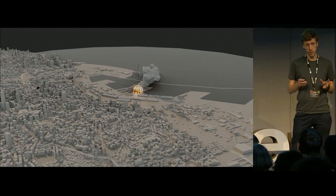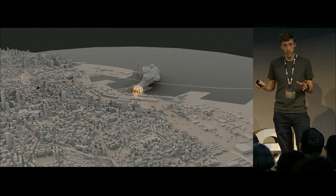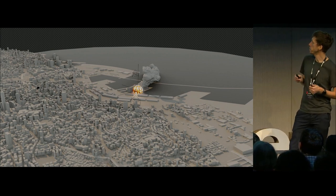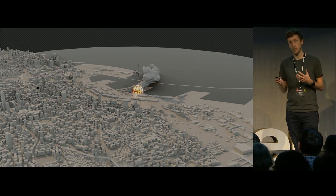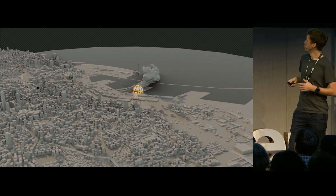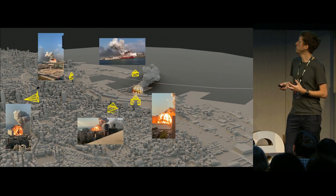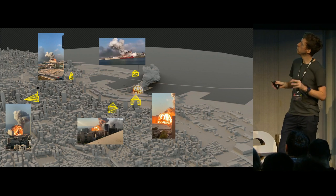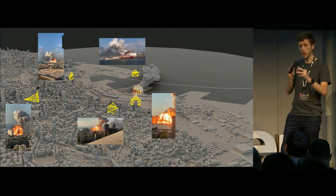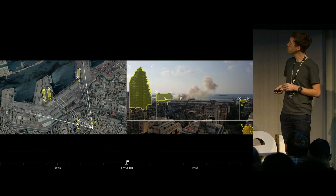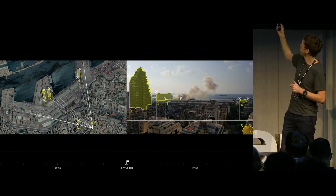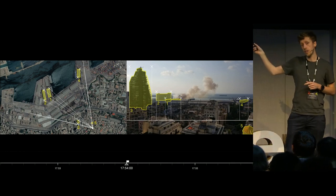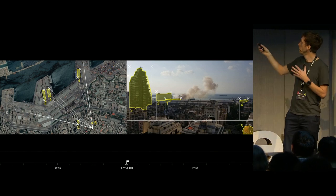We also situate those pieces of footage in space. Here you can see a very detailed model of the city of Beirut, taken from OpenStreetMap data. We've got all of the buildings in the city, and within this model we situate the camera positions from those pieces of footage. We take our cameras and work out where they are in space. If we have an image, we've got architectural elements that are visible, and they relate to objects on the ground, so we can locate these cameras.